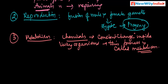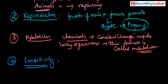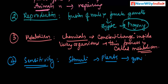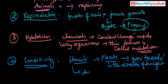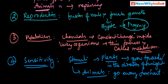The fourth one is sensitivity. All living organisms are sensitive to different kinds of stimuli. For example, plants grow towards sunlight — in the direction of sunlight. Animals, for example, almost all animals move away from heat. That is what sensitivity is. So we have growth, reproduction, metabolism, and sensitivity.